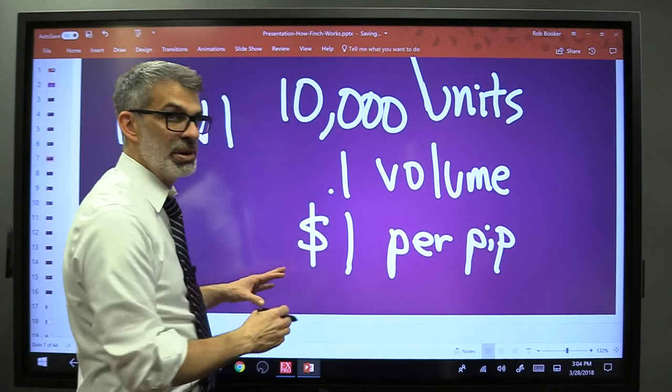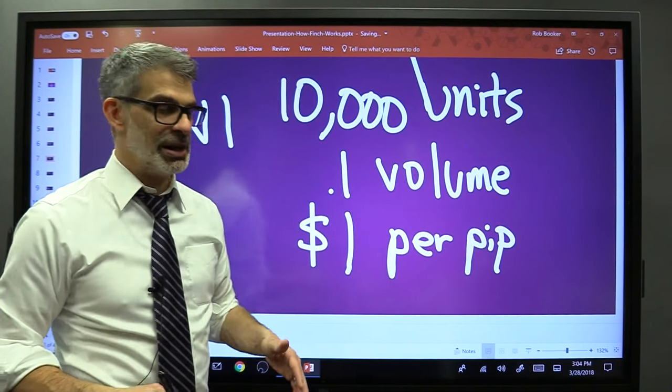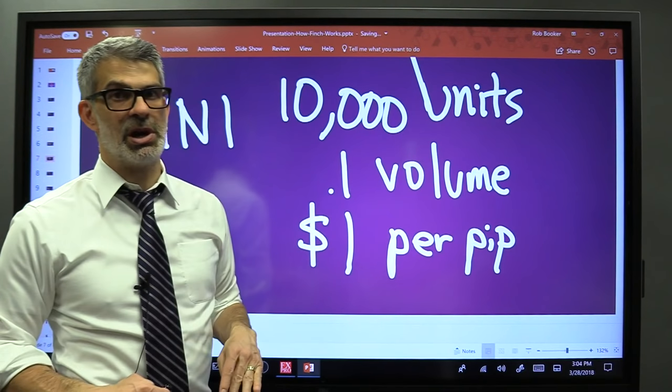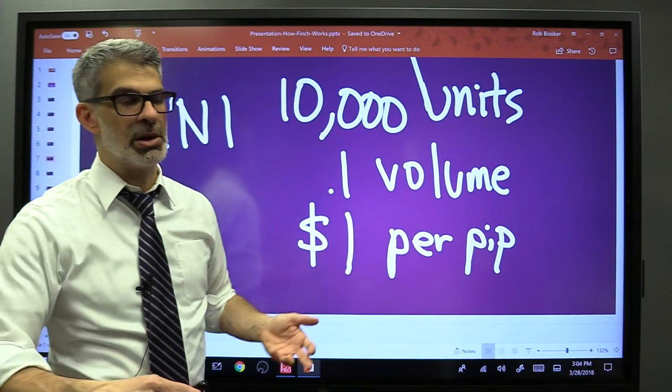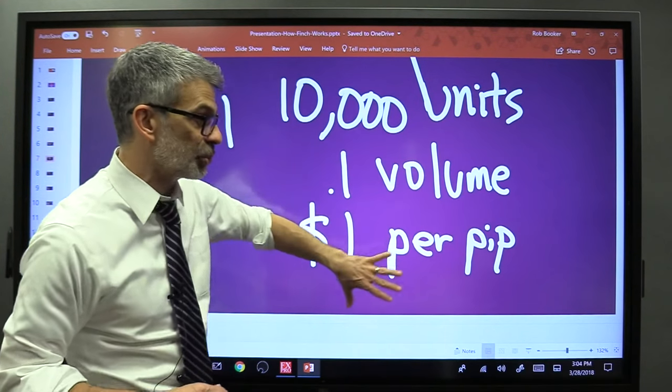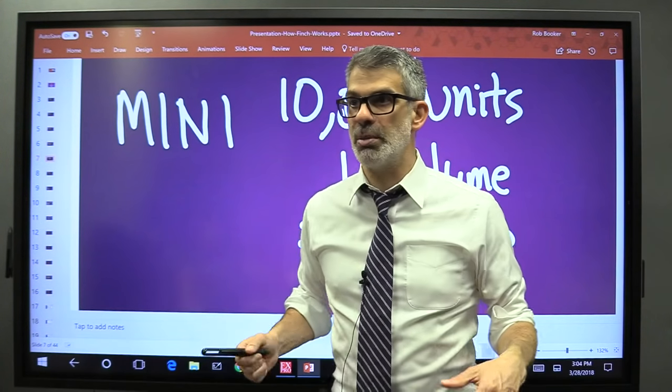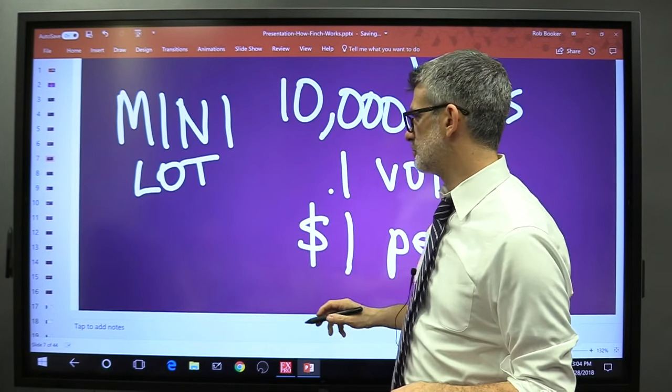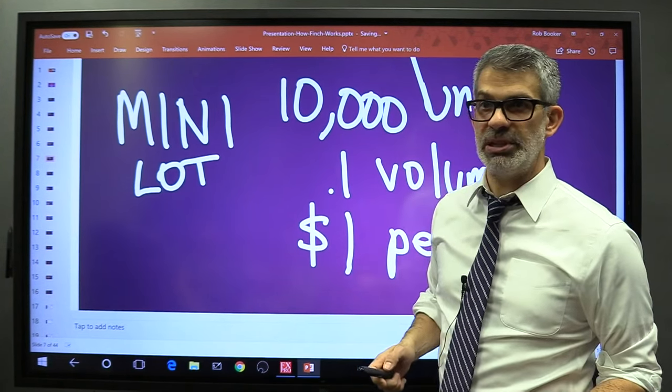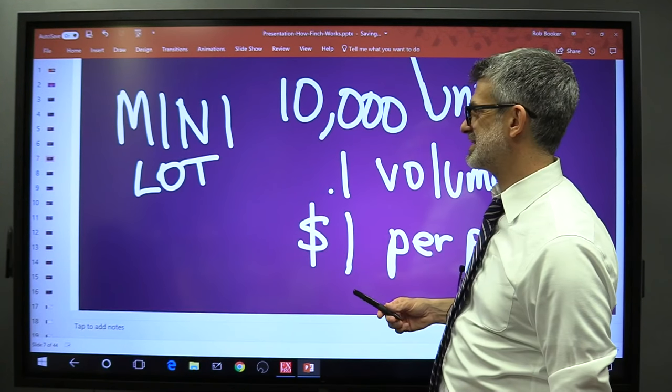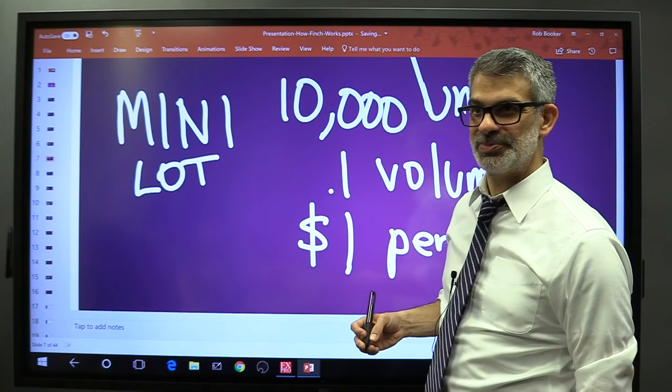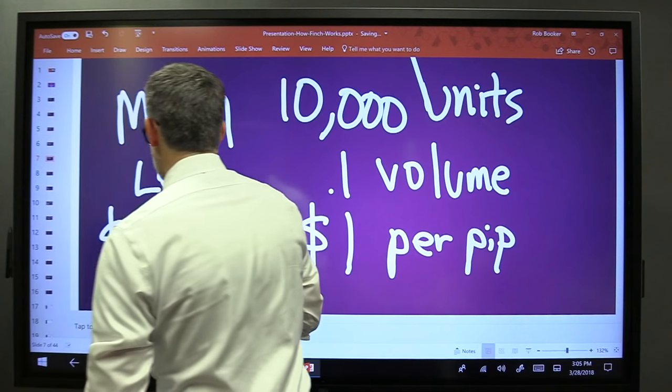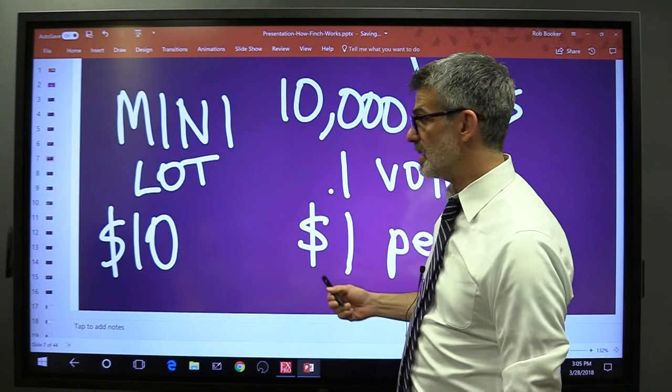Now, this is a general number. If you're trading the US dollar Japanese yen in the United States, it might be worth 79 or 80 cents. If you're trading the British pound Australian dollar, it might be worth a dollar 20. It's gonna change, but it's gonna be in this range. If you make 10 pips on a mini lot, that would be $10, because one pip is worth a dollar.